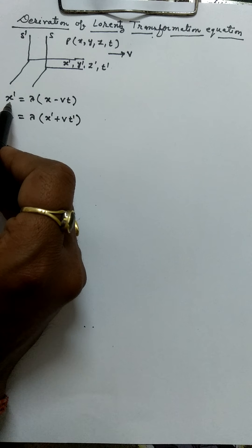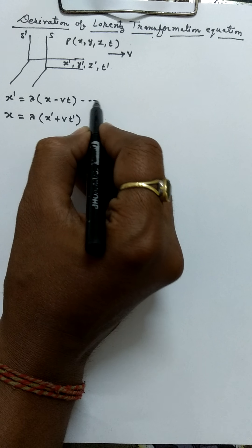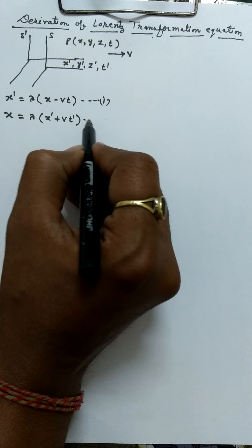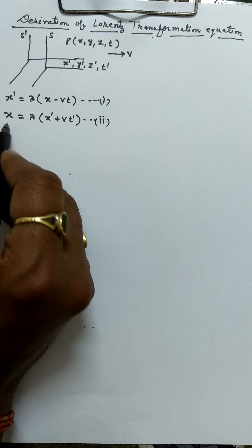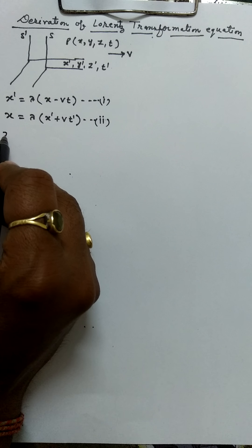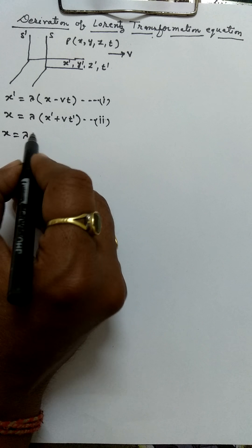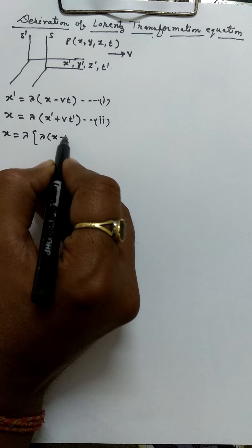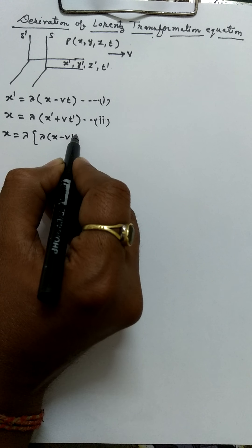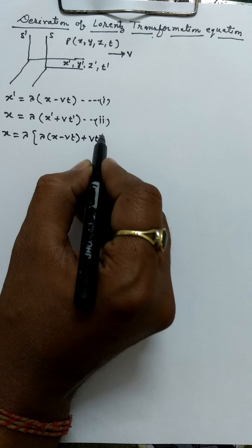Put the value of x dash from equation number 1 into equation number 2. This equation then becomes: x equals lambda times (lambda x minus vt) plus vt dash.